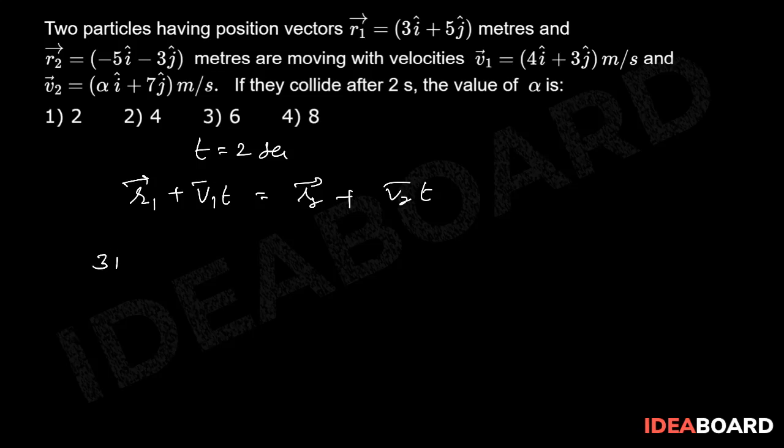That is 3i cap plus 5j cap plus 4i cap plus 3j cap into 2 equal to minus 5i cap minus 3j cap plus alpha i cap plus 7j cap into 2.